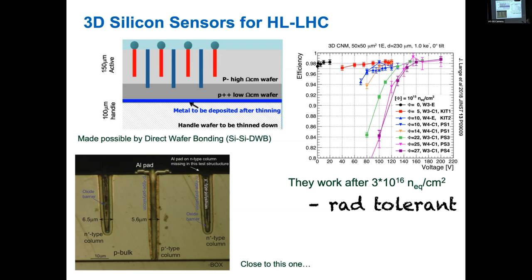Now you have a single-sided process — you drill both columns from the top, doping some n-type and others p-type, with a high-resistivity part at the bottom connecting all columns to one potential. The traveling distance is just 30 micrometers around. These work after 3×10^16 — really, really radiation tolerant. But in CMS and ATLAS, we are not using them for radiation tolerance; the planar ones are good enough. We need them because they use five times less power, otherwise we'd have to replace detectors for power reasons, not radiation tolerance reasons.